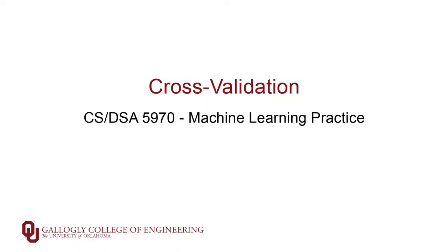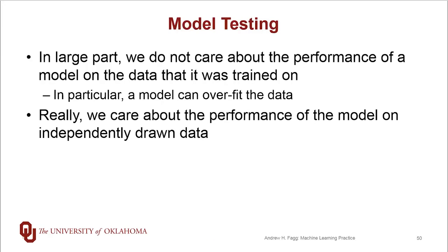We've built our first classifier model and measured its performance, achieving an area under the curve (AUC) of around 0.7, which is a fair distance from random (0.5). But now it's time to admit that I swept a couple of details under the rug, and we need to take a step back and look carefully at these issues before we make real conclusions about how our model is performing. Fundamentally, we really don't care about how a model performs on the training data used to construct the model itself.